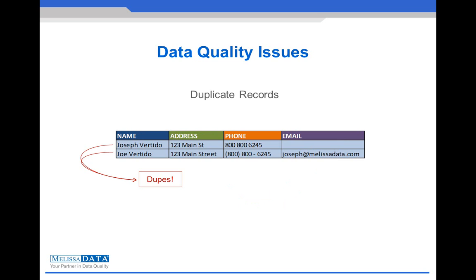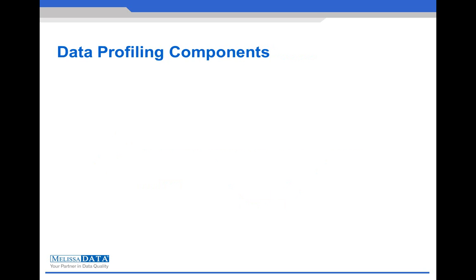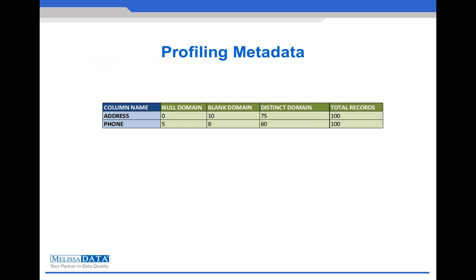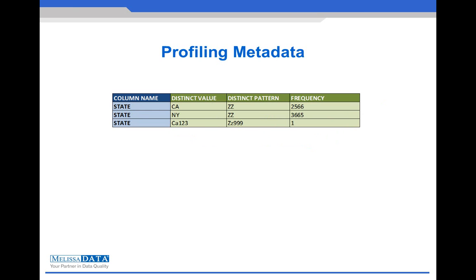How do we even know in the first place if we have any of these problems? The MelissaData profiling components allow us to gather crucial information about our database to help us have a better understanding of the data, identify the issues we have, where they commonly appear, and how bad the situation actually is. Capabilities include checking for null or blank values, how many unique and duplicate records there are, and what the common patterns are for identifying inconsistencies.